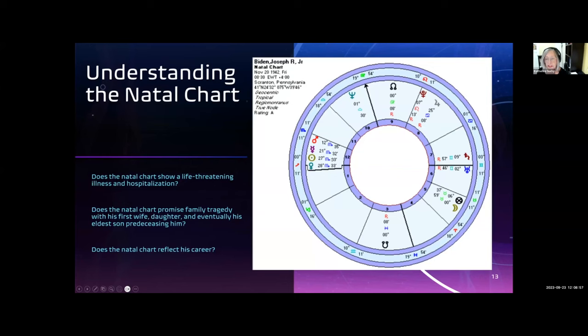And then the next point is, does the chart promise a family tragedy with his first wife, daughter, and eventually his eldest son pre-deceasing him? Looking at the seventh house, as for his first wife, we see that Saturn and Uranus are there. According to Moran, Saturn in the seventh can mean that his spouse will pre-decease him. Uranus is closely conjunct the descendant, indicating sudden unexpected events.